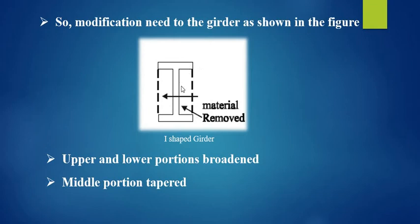The modification needs to be located as on the figure. The upper and lower portions are broadened, middle portion tapered. The material is removed here. Here, the load-bearing surface is large. This looks like the English letter I. Therefore, this is called I-shaped girders.